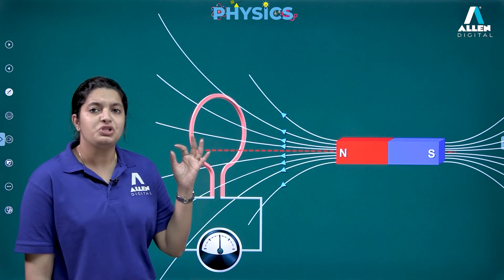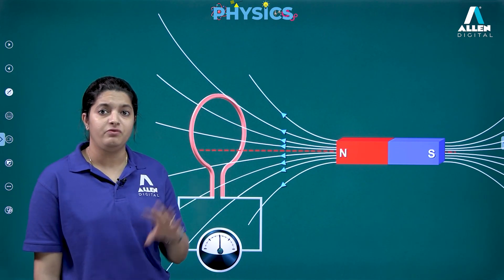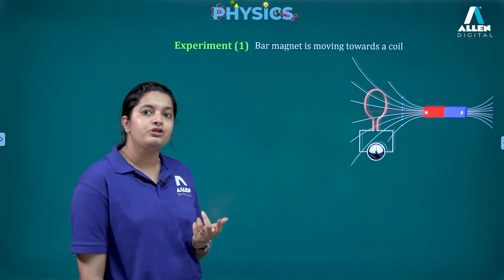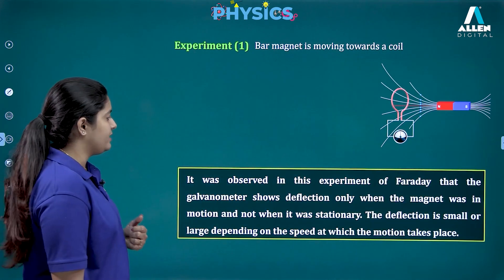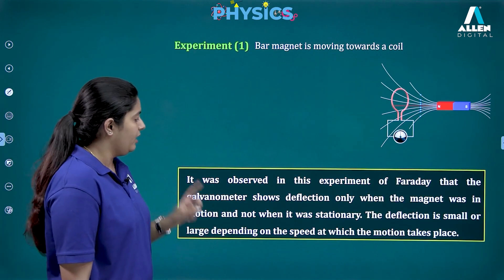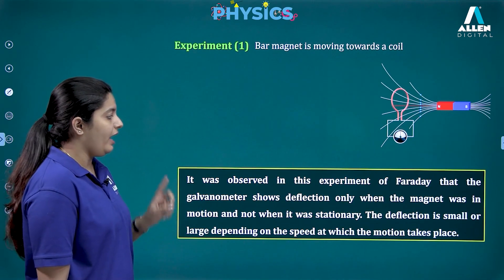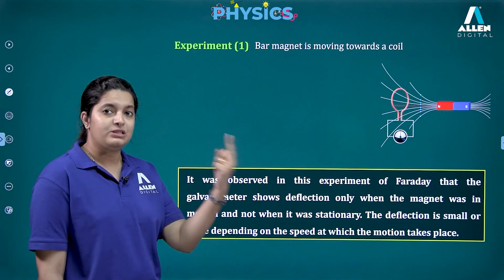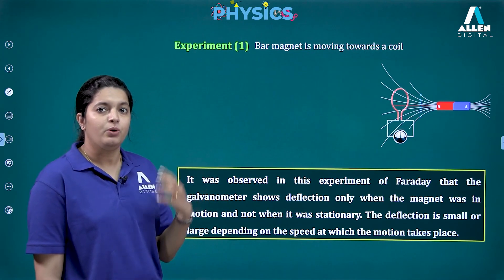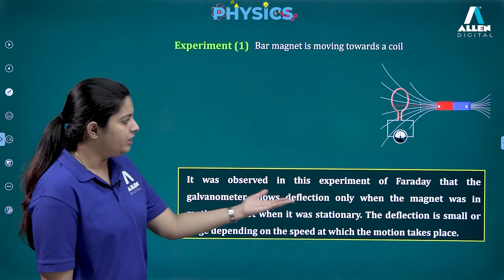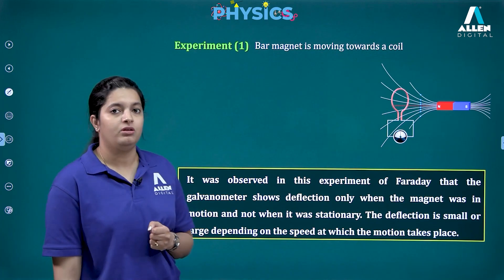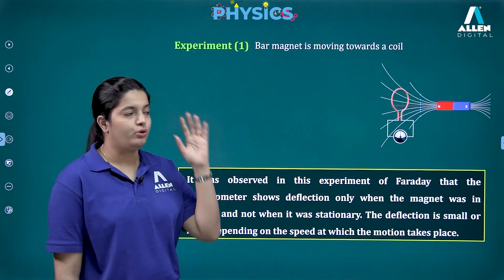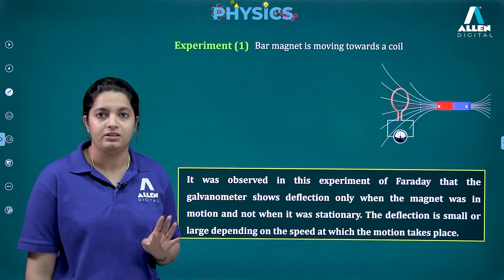This indicated that there is some kind of current flowing in the circuit without any power source. The conclusion of this experiment was that the galvanometer shows deflection only when the magnet is in motion, not when it is stationary. The deflection is small or large depending on the speed at which the motion takes place.